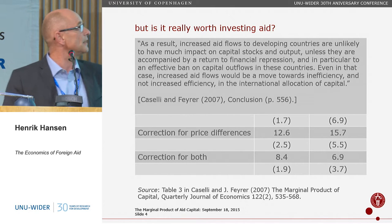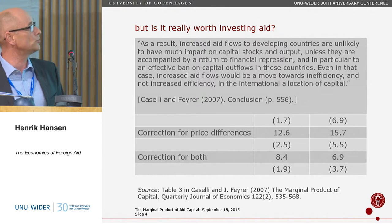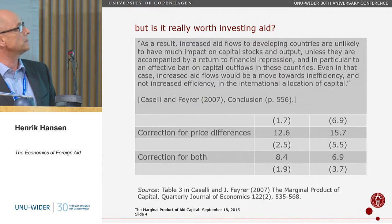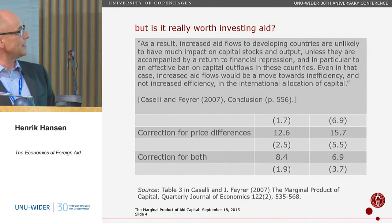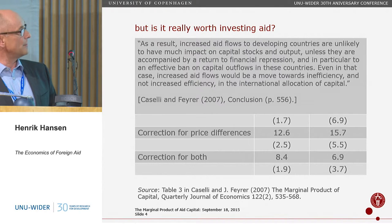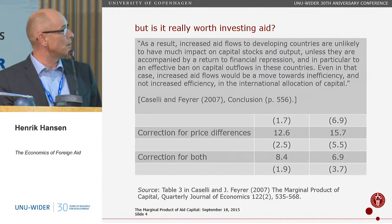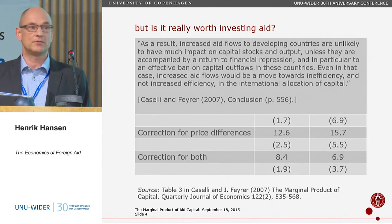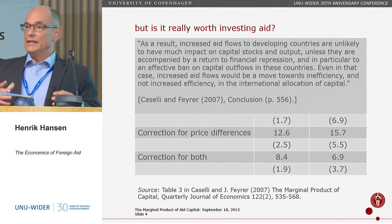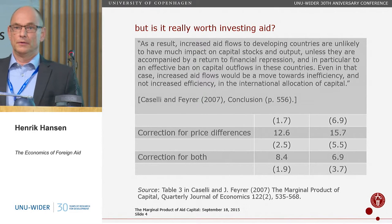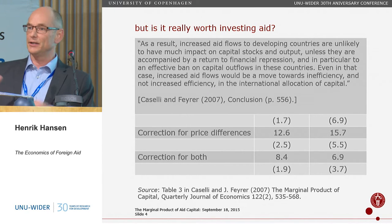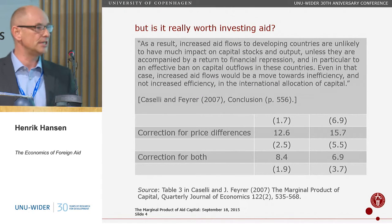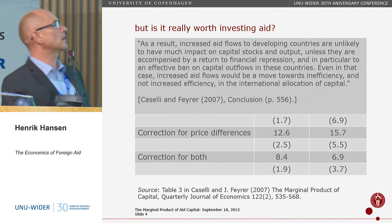Caselli and Fyre conclude that increased aid flows to developing countries are unlikely to have much impact on capital stocks and output unless accompanied by a return to financial repression and, in particular, an effective ban on capital outflows. Even in that case, increased aid flows would be a move towards inefficiency, not increased efficiency, in the international allocation of capital. So in that perspective, calls for more infrastructure investment are actually not efficient.